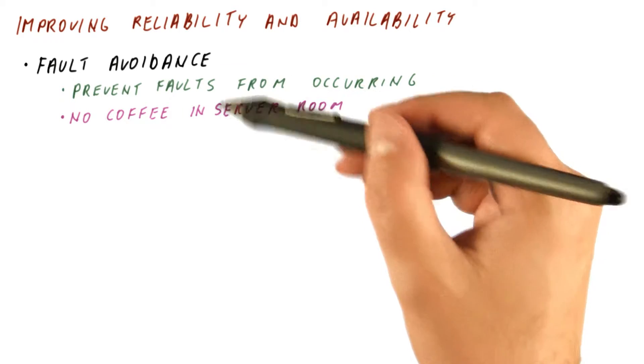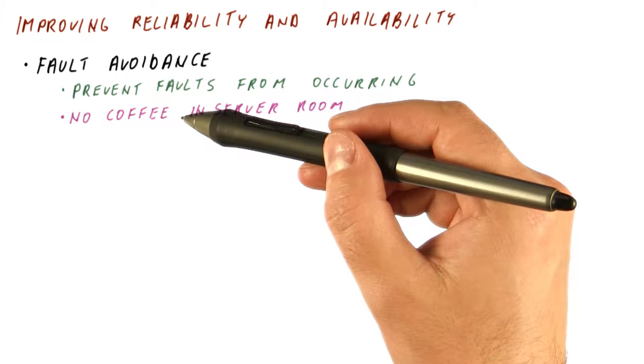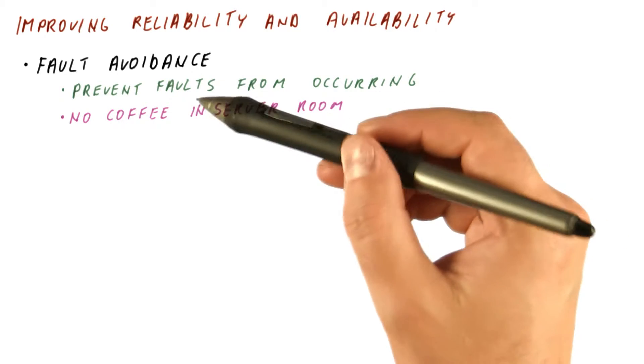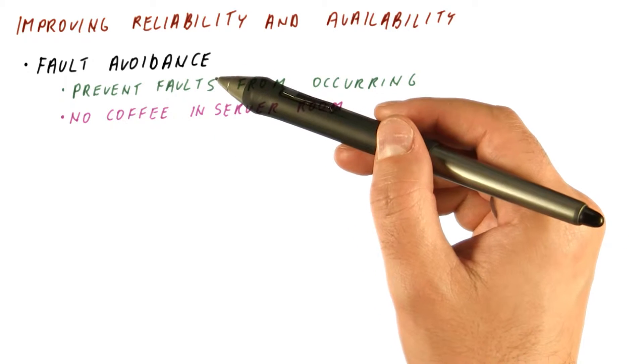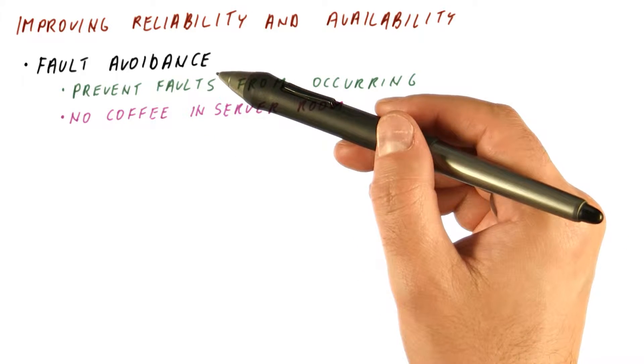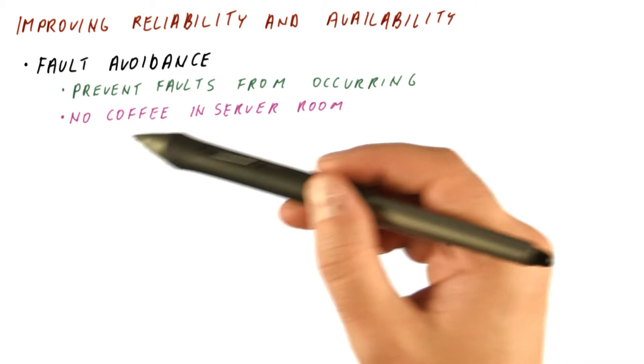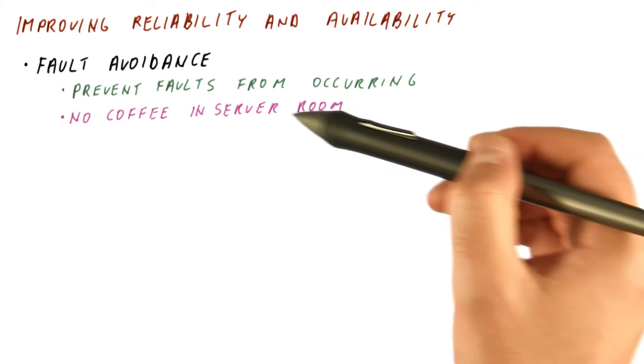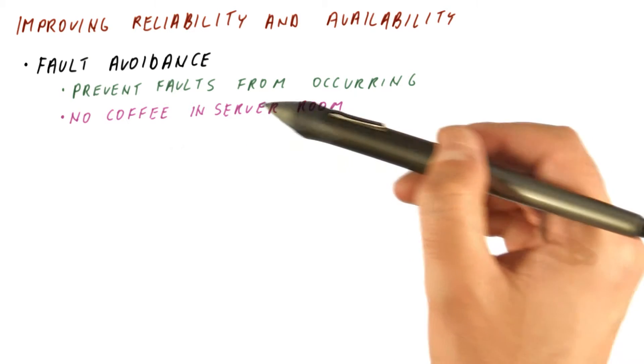For example, the no coffee in the server room is one example of a fault avoidance technique. If we spill the coffee on a server, that's probably going to be a fault. So we're trying to avoid that fault by preventing people from bringing coffee into the server room.